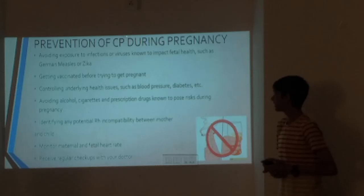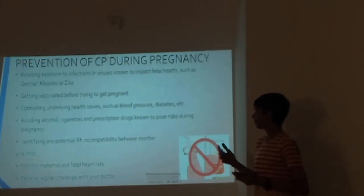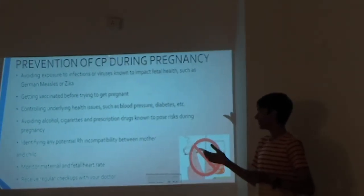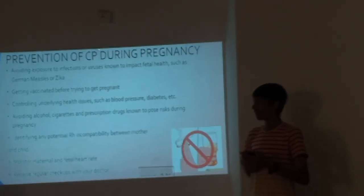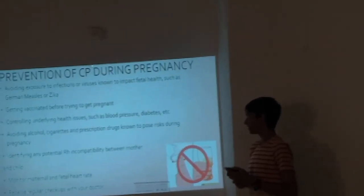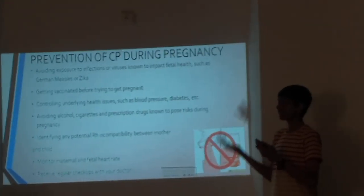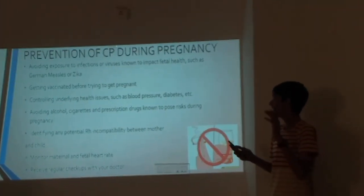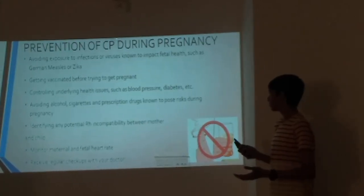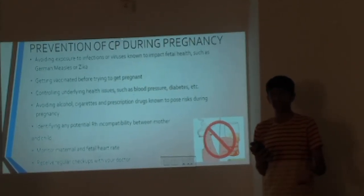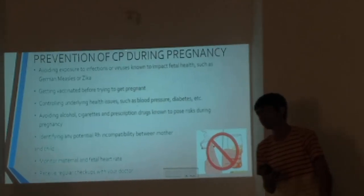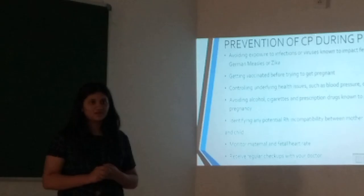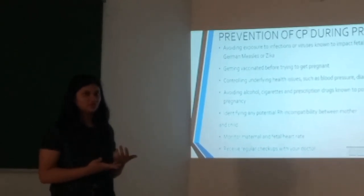Prevention of Cerebral Palsy during pregnancy includes avoiding exposure to infections and viruses, and monitoring the health of the fetus for conditions such as German measles or cystic issues. Getting vaccinated before trying to get pregnant is also important. It is all about maintaining the health of both the mother and the fetus, and controlling underlying conditions like blood pressure and diabetes. Avoiding alcohol, cigarettes, and drug use is a very important step, not only during pregnancy but at any stage of life. Regular checkups with the doctor are also essential.